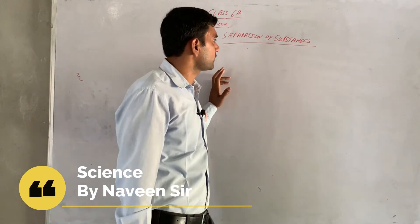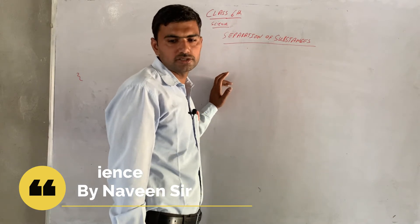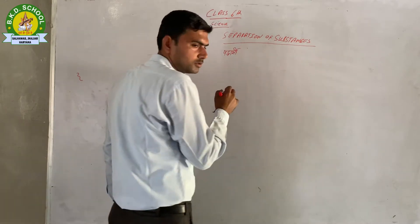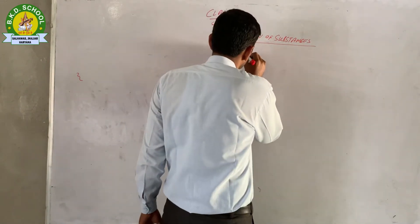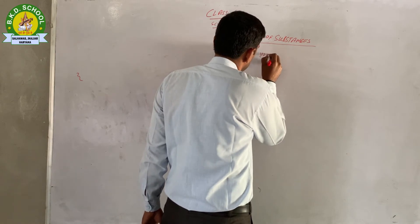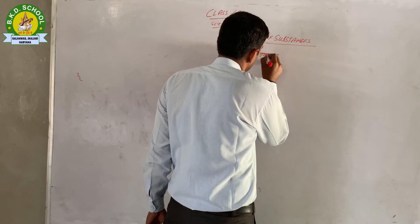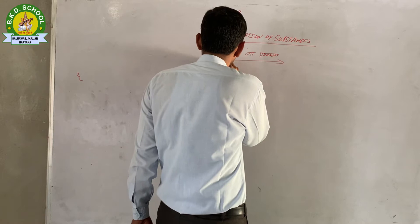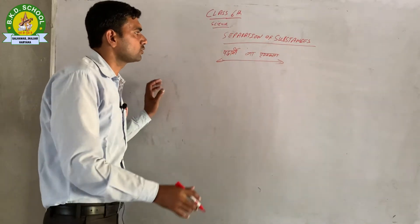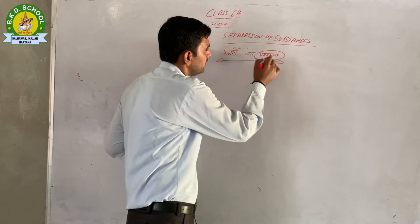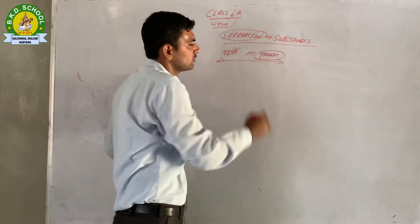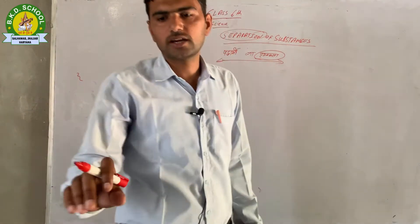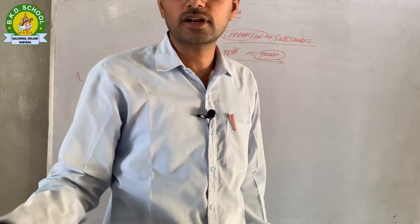Class 6. Our lesson is Separation of Substances — पदार्थों का पृथक्करण। पृथक्करण क्या होता है? जो पदार्थ आपस में मिले हुए हैं उनको अलग-अलग करना, उनको सेपरेट करना — यही पृथक्करण है।